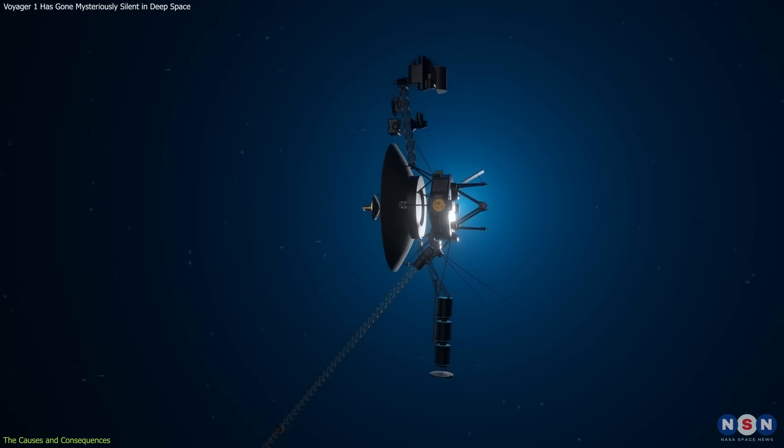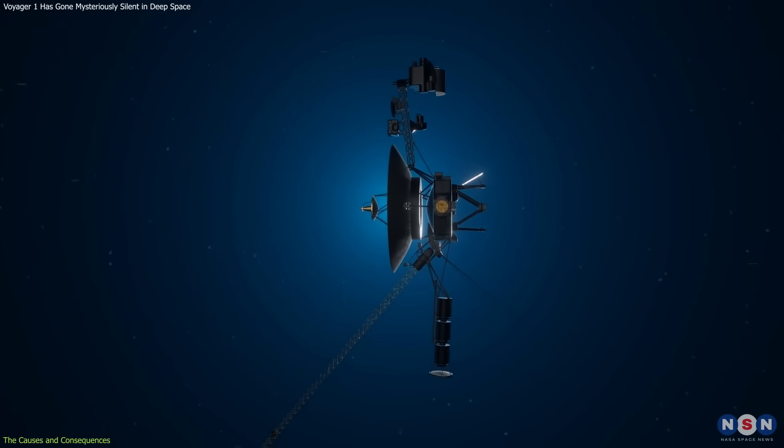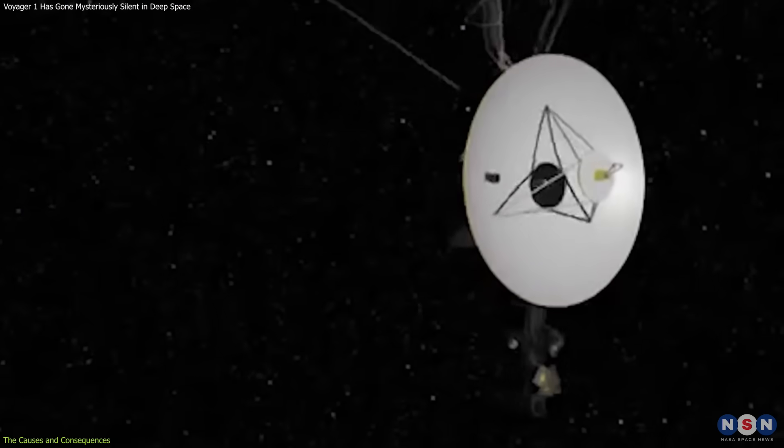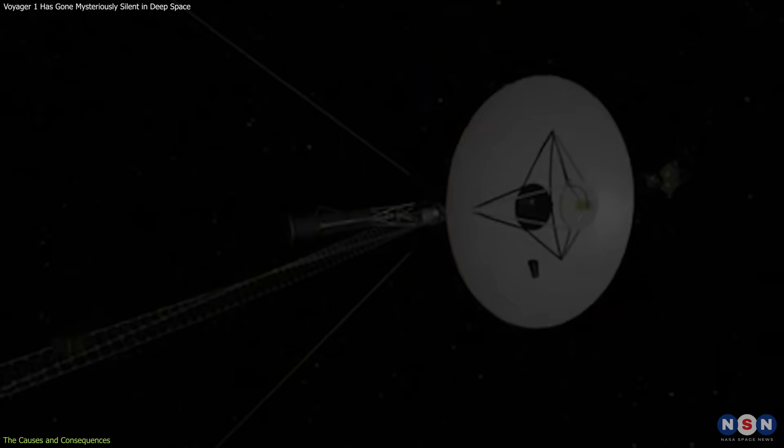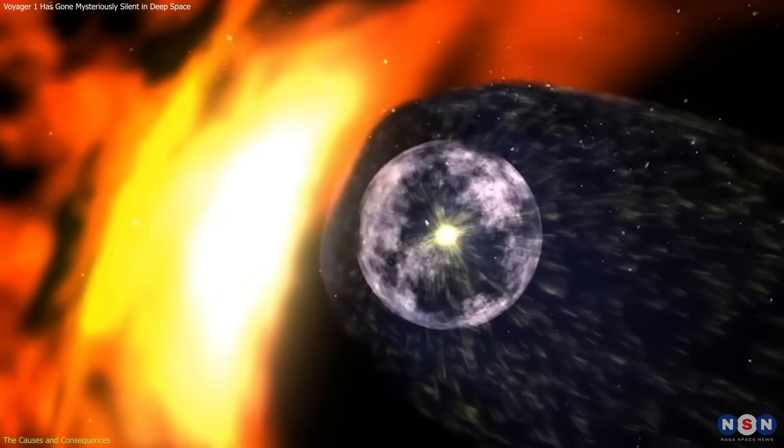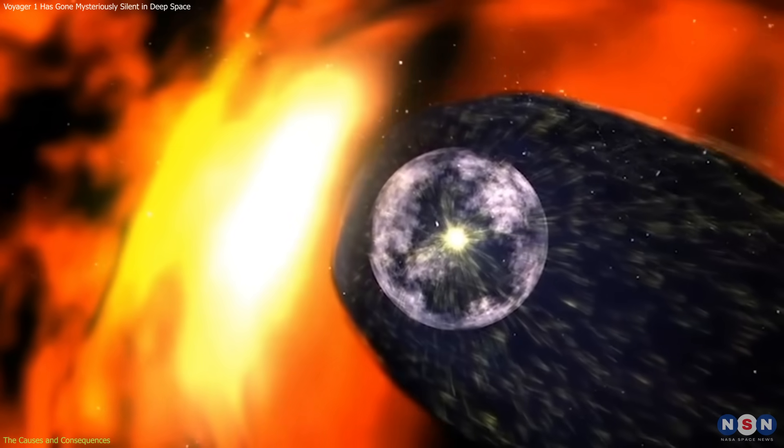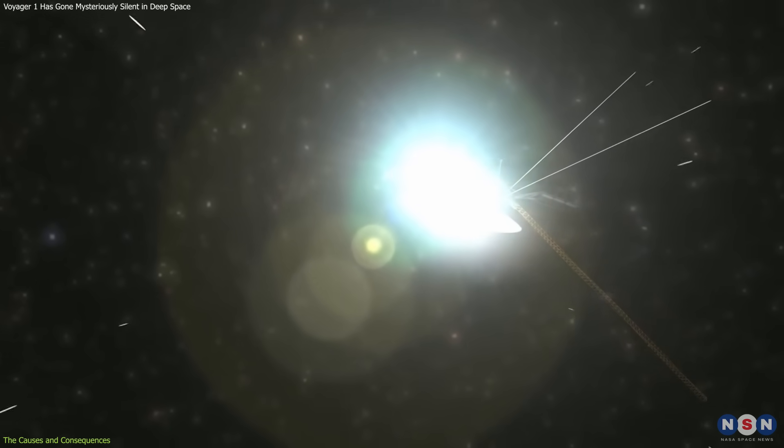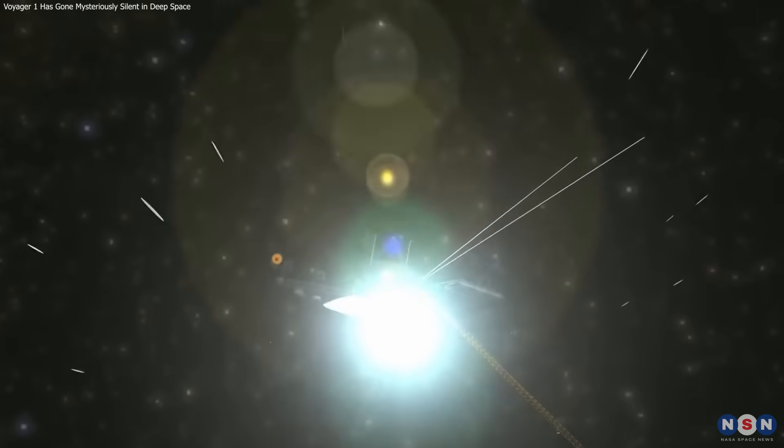The engineering data includes information about the spacecraft's status, such as its power, temperature, orientation, and velocity. Both types of data are valuable for understanding the nature and properties of interstellar space and for monitoring and maintaining the health and performance of Voyager 1.